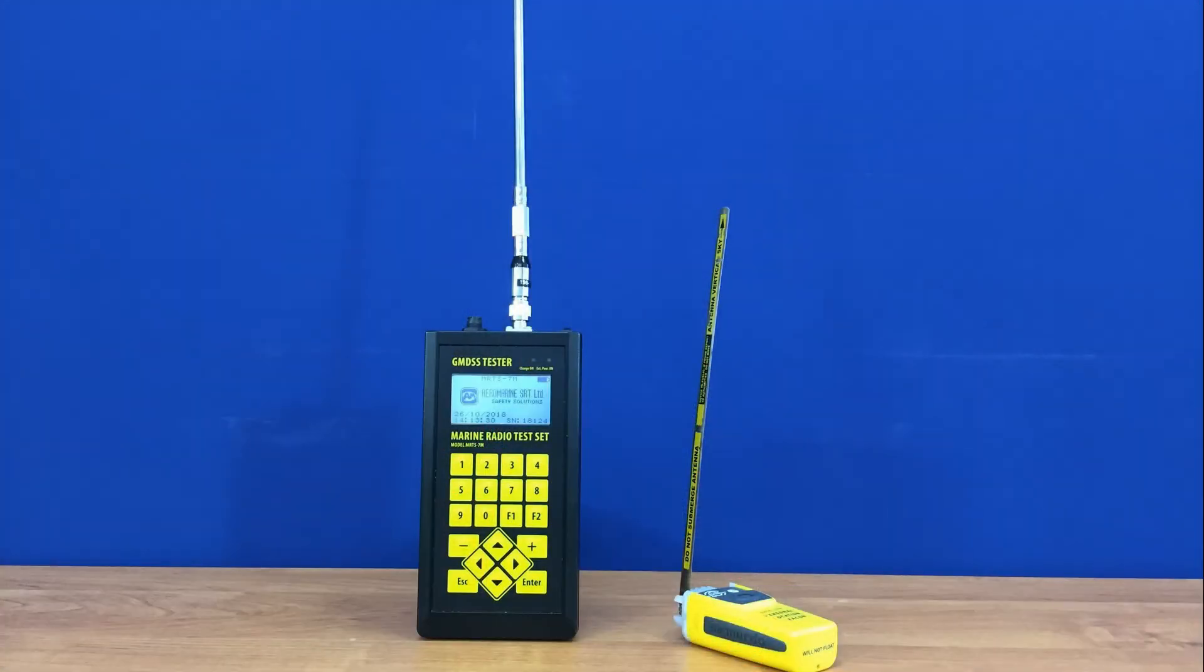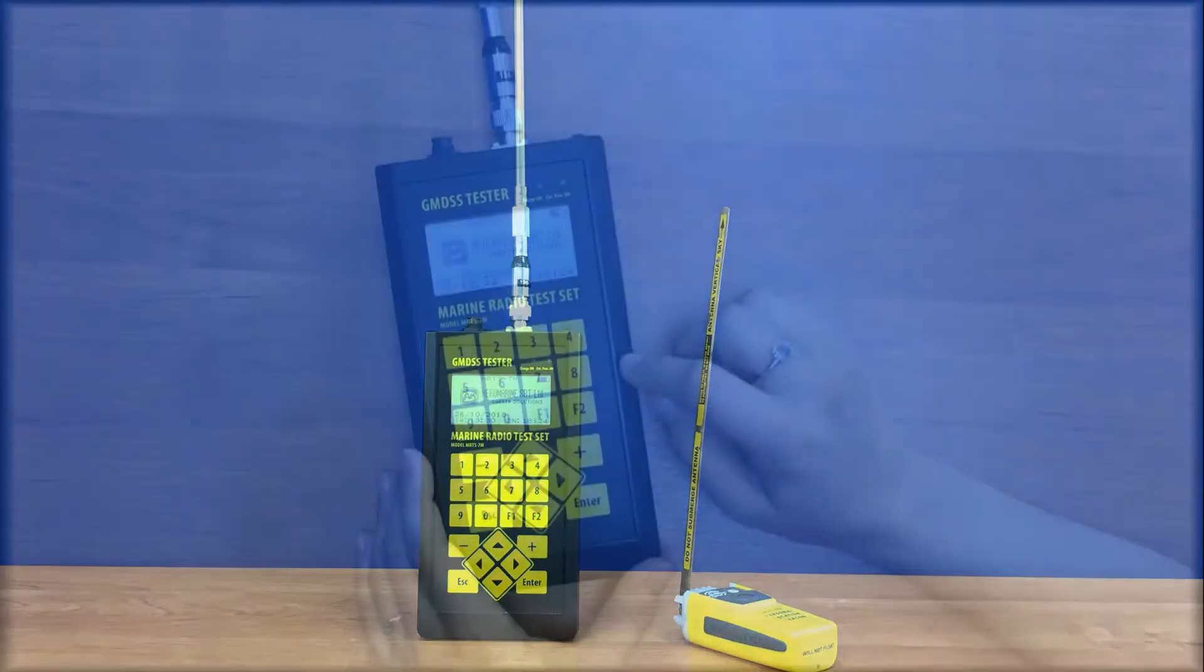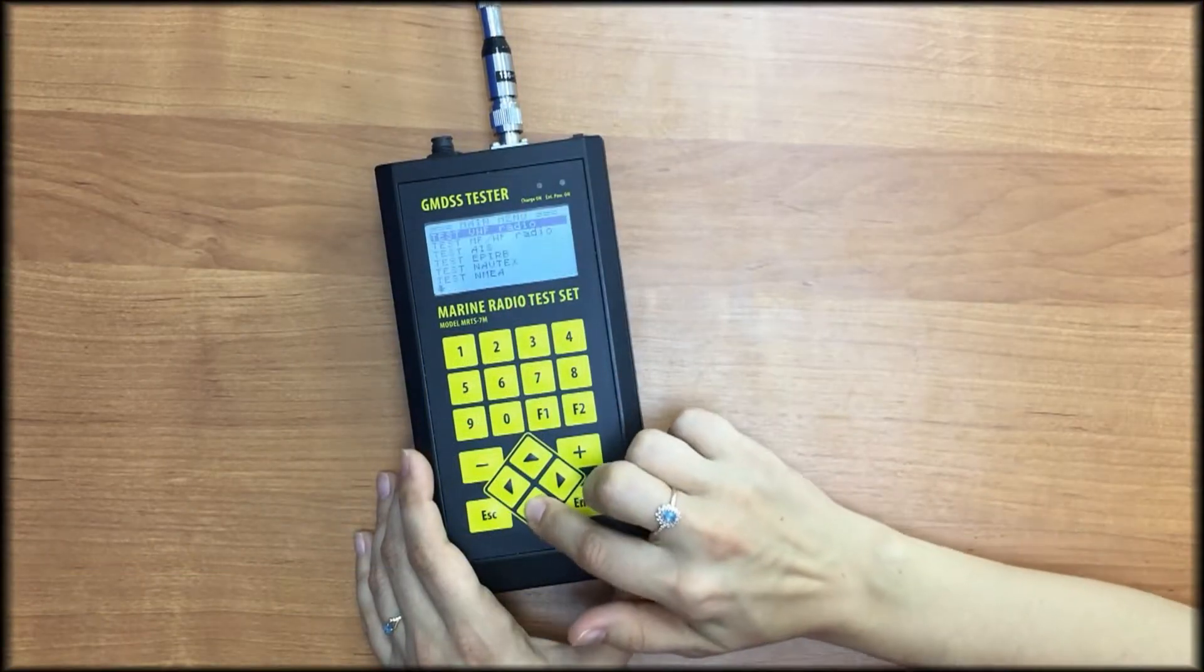If you don't need to test the homing signal or your beacon doesn't have this channel, like for example PLB, it is possible to test 406 MHz frequency only. We go to test menu, select test E-PIRB, then select test channel 406 MHz.